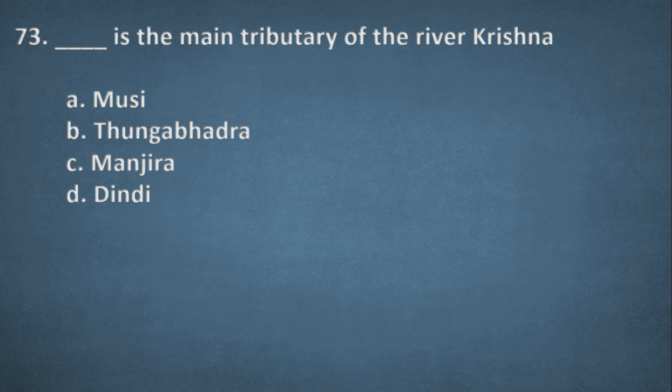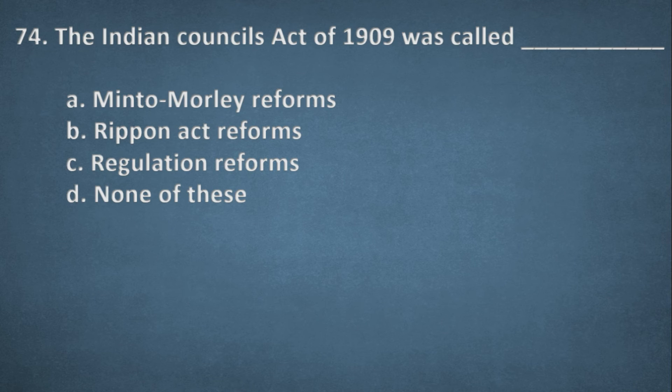Next one. Dash is the main tributary of the river Krishna. Options: Musi, Tungabhadra, Manjira, Dindi. The right option, B, Tungabhadra. Next one. The Indian Councils Act of 1909 was called. Options: Minto Morley reforms, Ripon Act reforms, Regulation reforms, None of these. The right option, A, Minto Morley reforms.